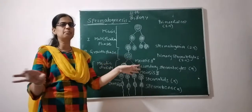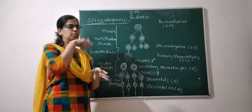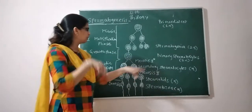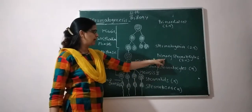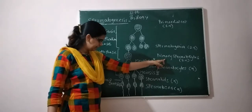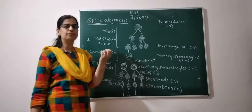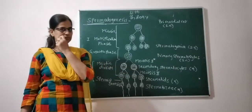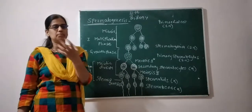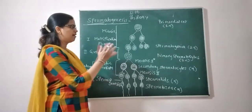The spermatogonia develop into primary spermatocytes due to accumulation of food material, which drives their growth and development.